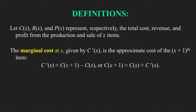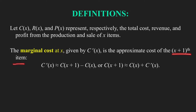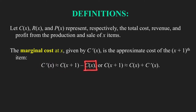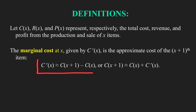When we use the derivative to compute marginal cost, it represents the approximate added cost of producing an additional item. Therefore, the marginal cost at production level x is the approximate cost of the next item, which is the (x+1)th item. The derivative c'(x) approximates the exact cost of producing the (x+1)th item. Note that c(x) is the total cost of producing x units and c(x+1) is the total cost of producing x+1 units.